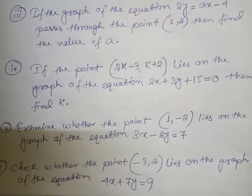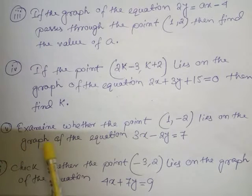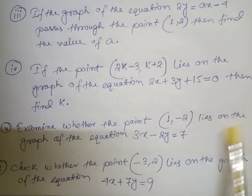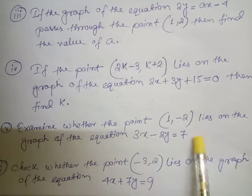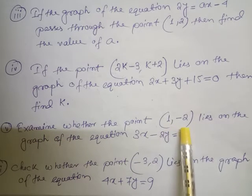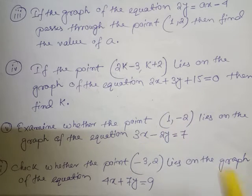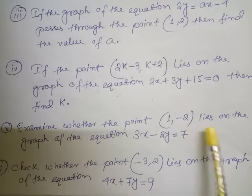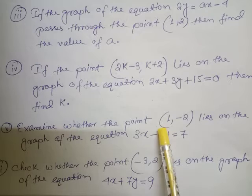Now let's solve Exercise 4.3, Class 9, Question 3(v): Examine whether the point (1, -2) lies on the graph of the equation 3x minus 2y equal to 7. We have to check whether the coordinates x=1, y=-2, when substituted into this equation, satisfy it — that is, whether these two coordinates lie on the graph of the equation or not.